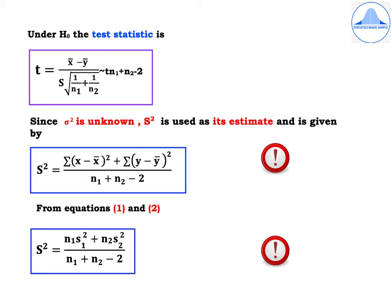Since σ² is unknown, capital S² is used as its estimate. S² = [Σ(x − x̄)² + Σ(y − ȳ)²] / (N1 + N2 − 2). Using equations 1 and 2 to replace the numerator values, we get S² = (N1·s1² + N2·s2²) / (N1 + N2 − 2). Depending on the information given in the problem, we use the appropriate formula for S².